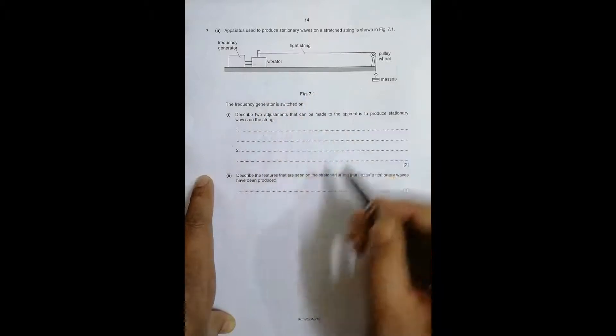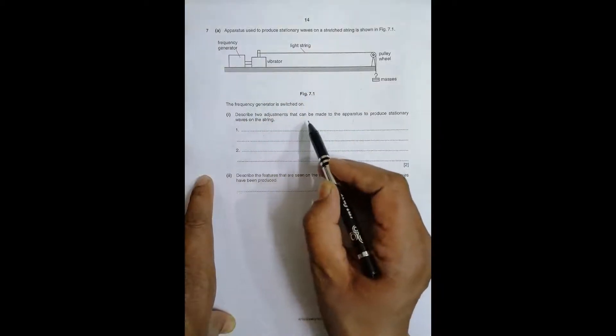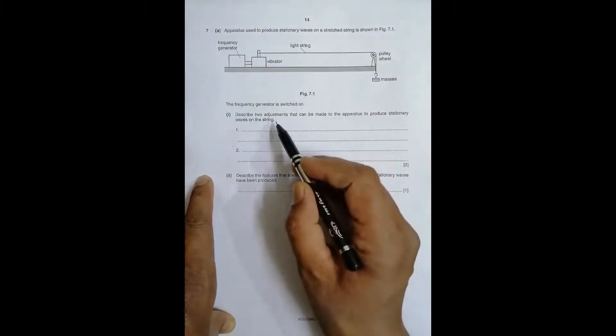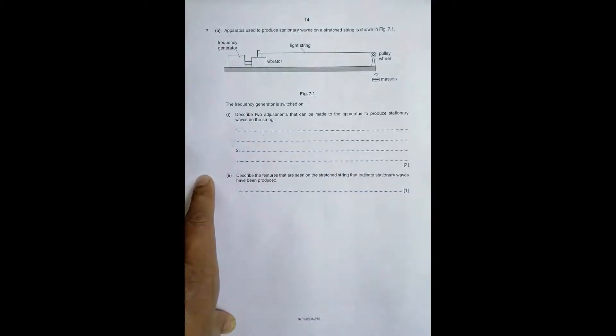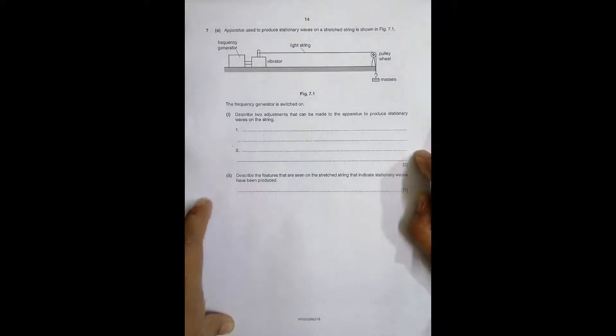The frequency generator is switched on. Describe two adjustments that can be made to the apparatus to produce stationary waves on the string. So this question is related to our practical skills. If somebody knows the theory and is given this device, often called a sonometer in other syllabuses, what do people do?